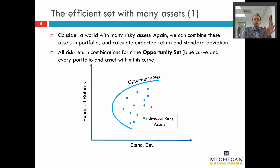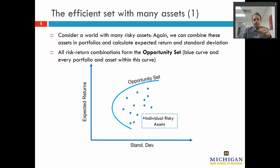I want to start with the investment opportunity set. Imagine that there is a very large number of individual risky assets that you could purchase. These assets could be stocks, they could be bonds, they could be artwork, vintage cars, property — these are all the individual risky assets that you could possibly buy. That set of individual risky assets is your investment universe. In our previous discussion, we worked out that if we combine assets into portfolios, we can come up with what we call efficient portfolios.